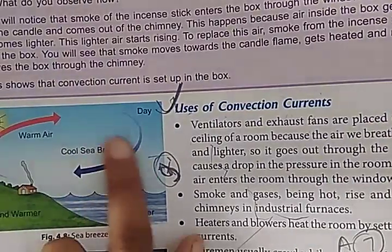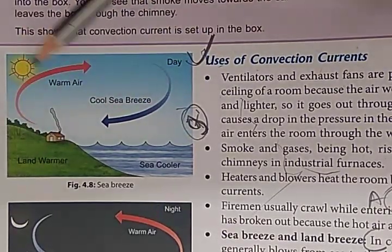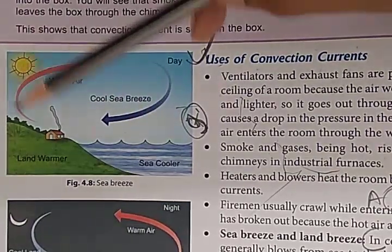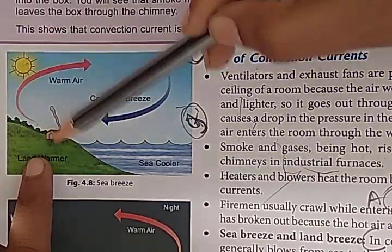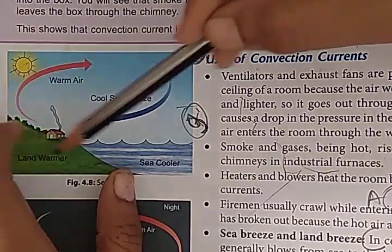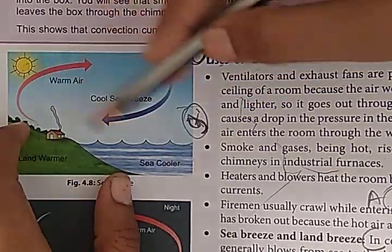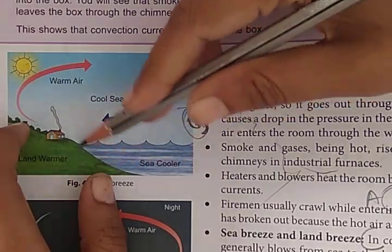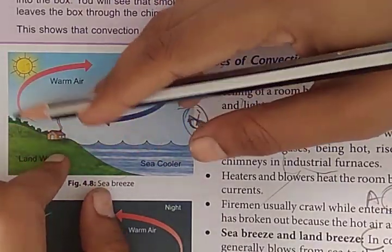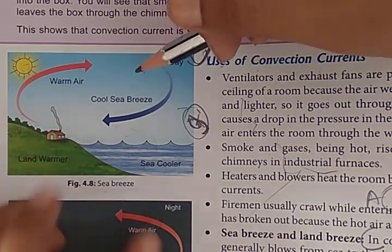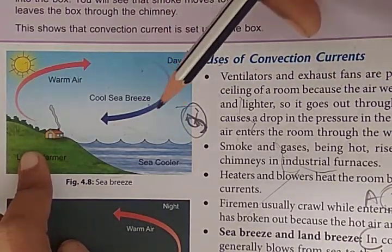During the day, the sun heats the land quickly, while the sea takes a long time to heat up. The temperature over the land rises and the air rises up, causing lower pressure over the land. Since pressure is less over the land than over the sea, the cooler air from the sea moves toward the land as sea breeze. So during the day, warm air rises over the land and cold air moves from sea to land.